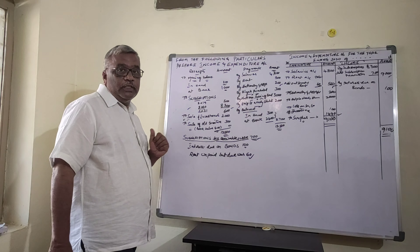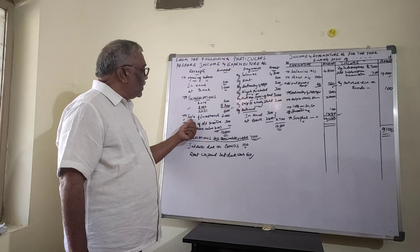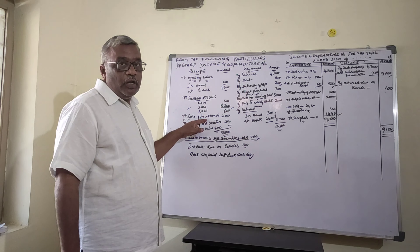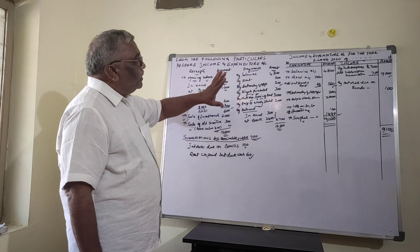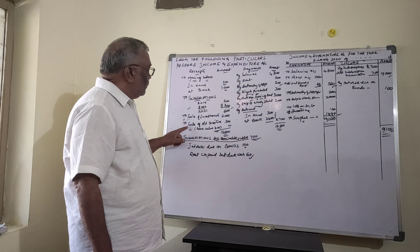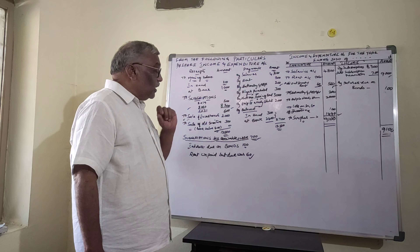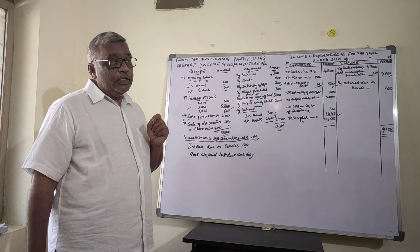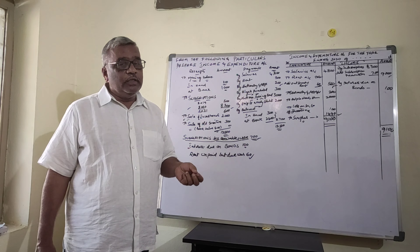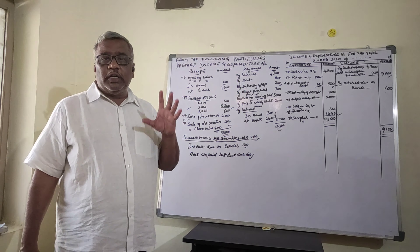Some items on the receipt side are capital in nature. For example, the sale of furniture — asset sales, investment sales, or sale of any asset — are capital receipt items and are not entered into the income and expenditure account directly.